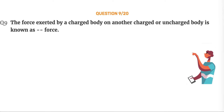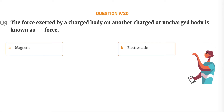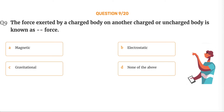Question number 9. The force exerted by a charged body on another charged or uncharged body is known as blank. Option A: Magnetic. Option B: Electrostatic. Option C: Gravitational. Option D: None of the above.